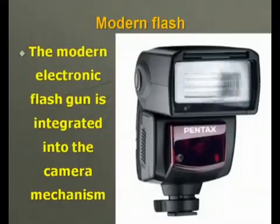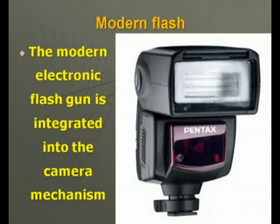Then, less than 10 years after the introduction of the flash bulb came the electronic flash for photography, developed around the year 1937 by Harold Edgerton of the Massachusetts Institute of Technology in the US. This great development freed the photographer from the burden of carrying expendable flash bulbs and gave him a light of such brief duration that he could stop a bullet in mid-flight. Later, electronic flash was designed and is now integrated into the camera mechanism itself.